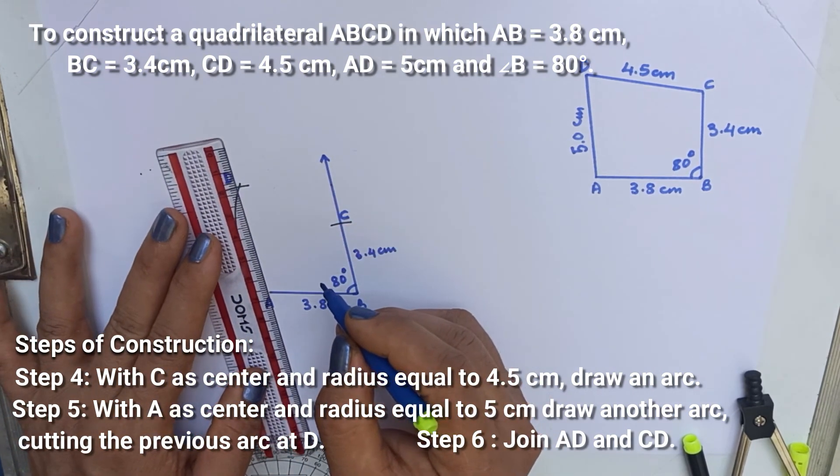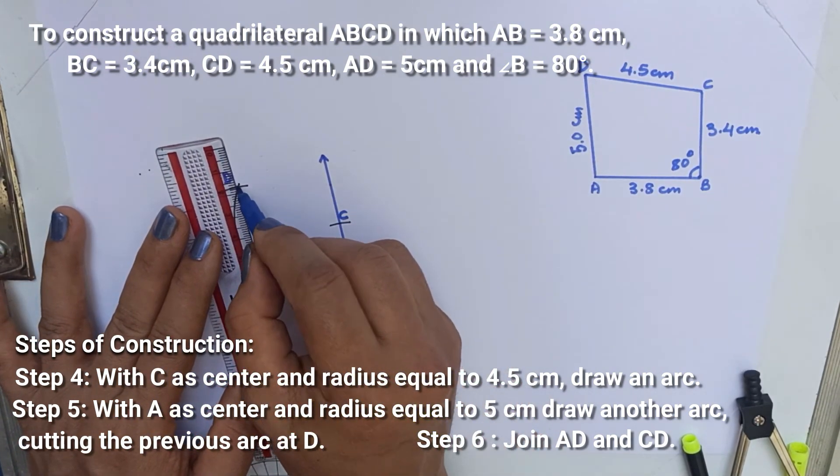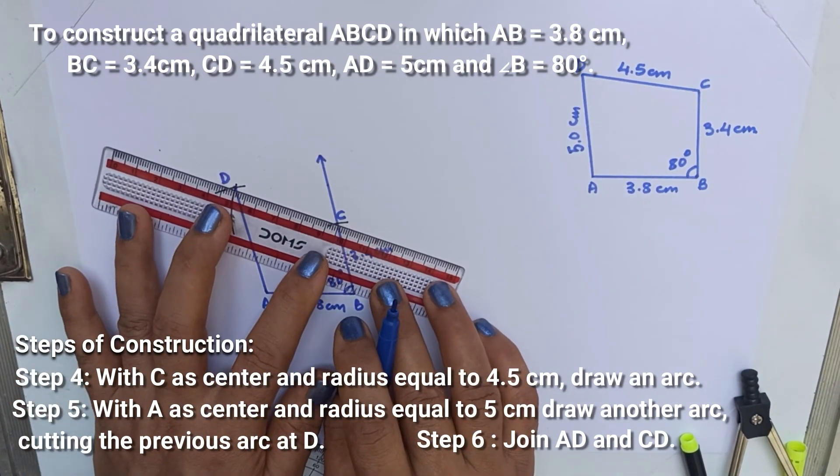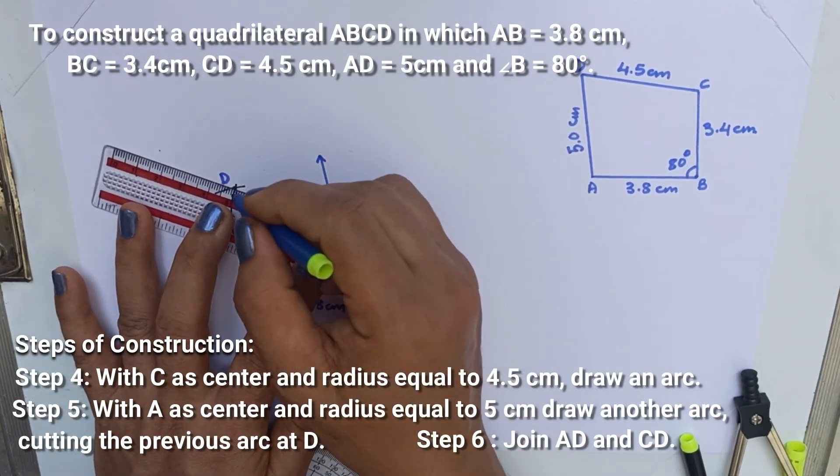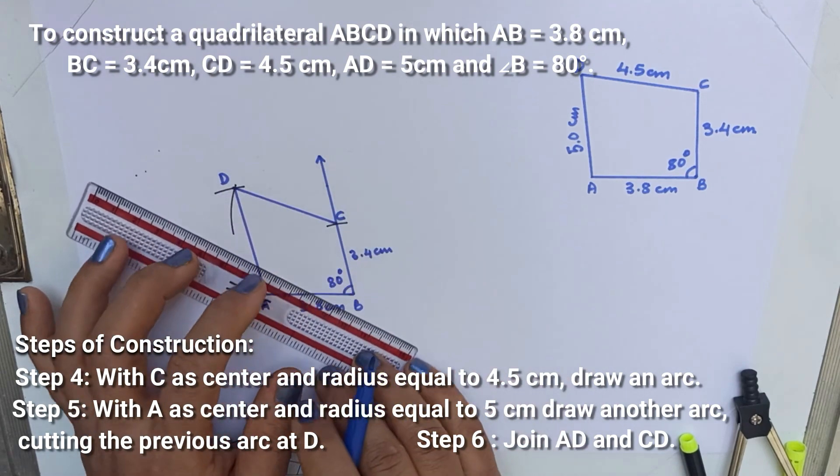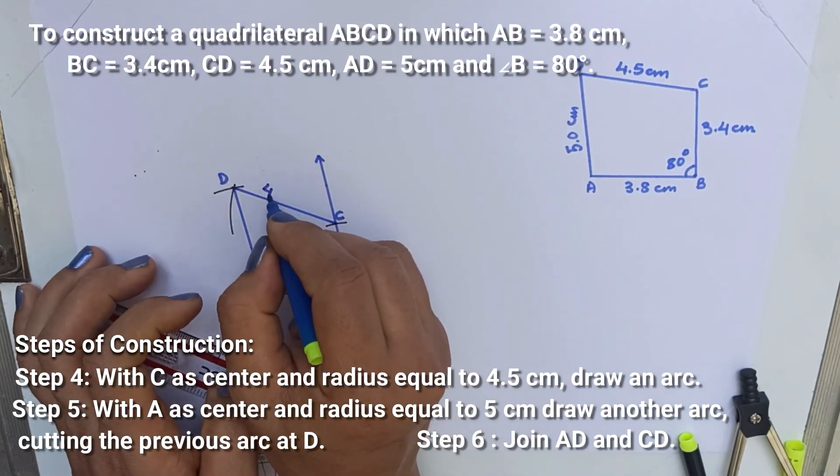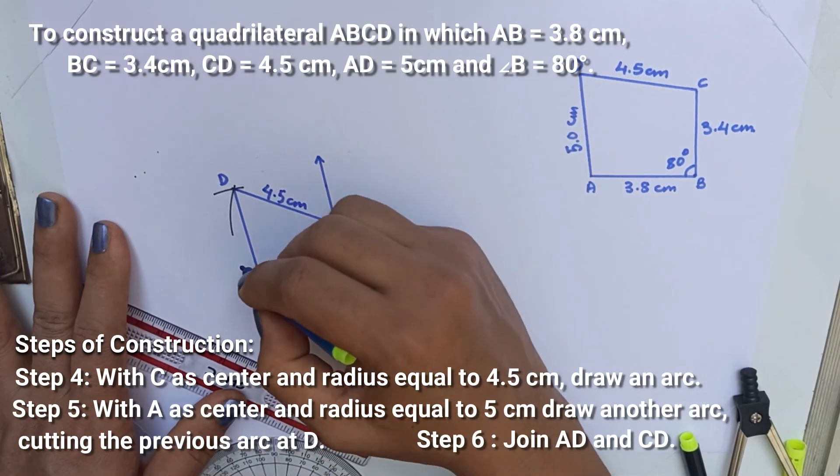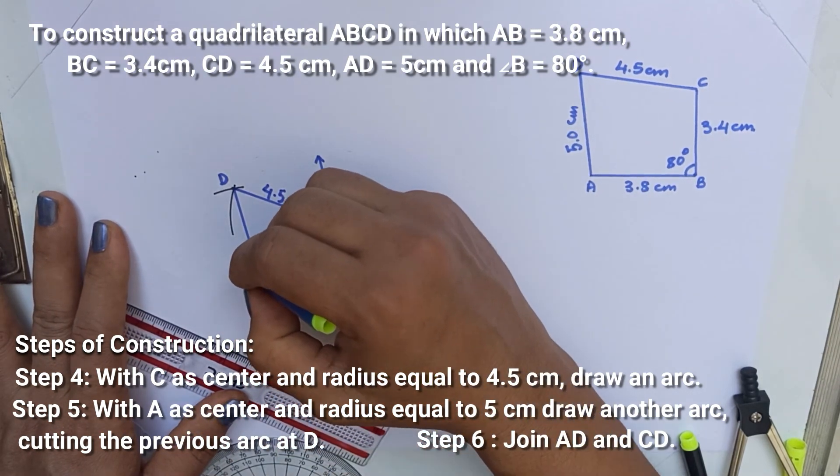This point is point D. Join AD and CD. Write the measurement CD equal to 4.5 cm and AD equal to 5 cm.